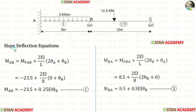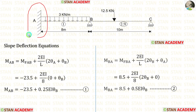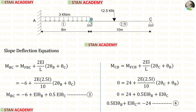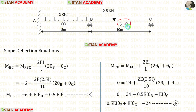Now let us make the slope deflection equations. First, for span AB: applying the fixed end moments and the span length of 8 m. Since point A has a fixed support, there will be no slope, so theta A = 0. We have made two equations for span AB. Now for span BC: applying the fixed end moments and span length of 10 m. Since the moment of inertia for span BC is 2.5I, we apply 2.5I instead of I.